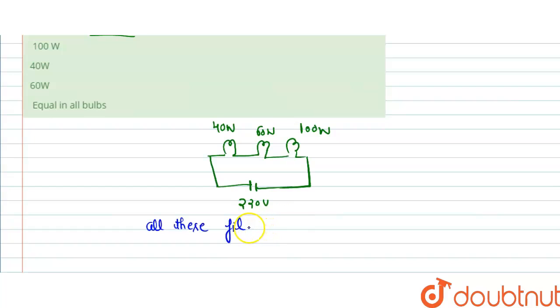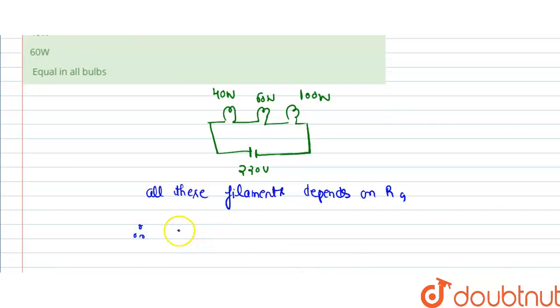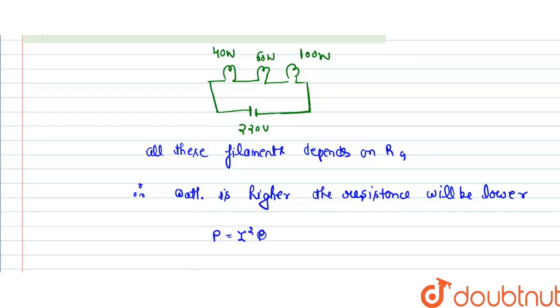All these filament elements depend on resistance and the voltage will be divided. When the wattage is higher, the resistance will be lower because P equals I squared R. So when wattage is higher, the resistance will be lower.